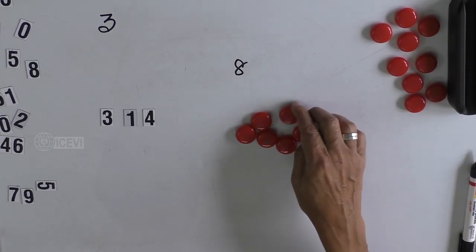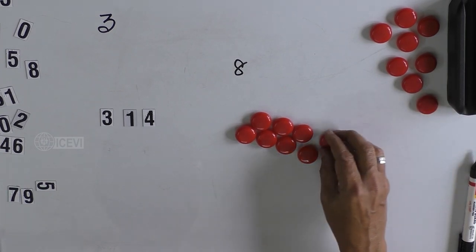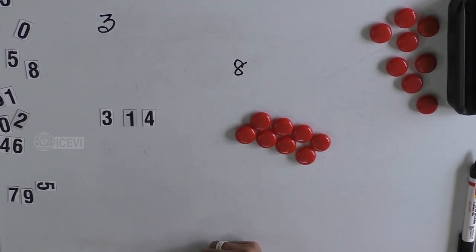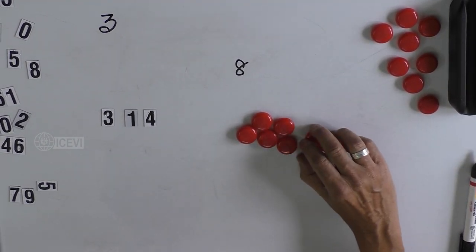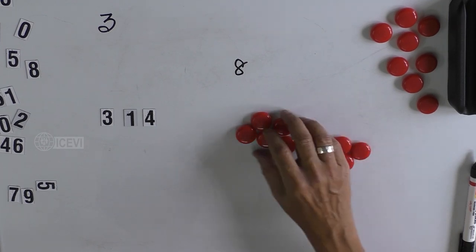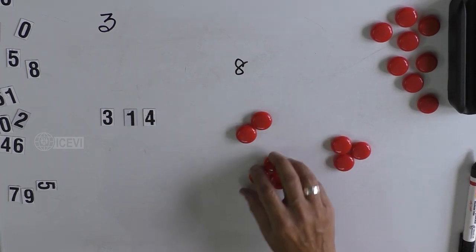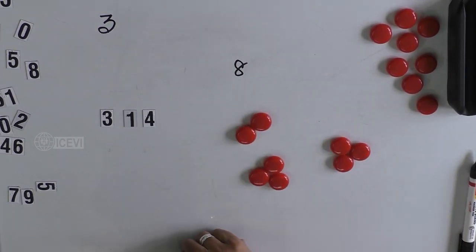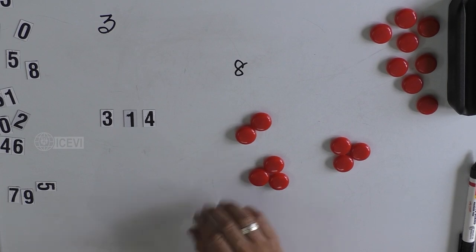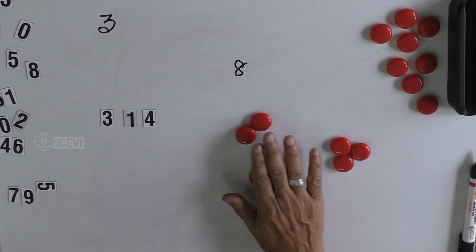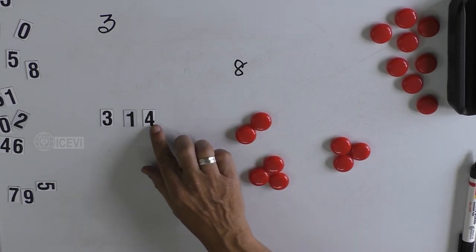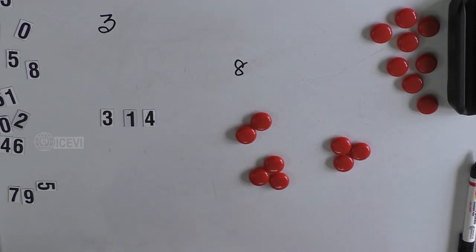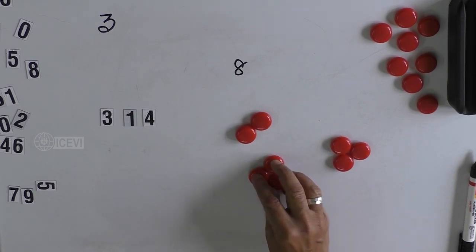4 plus 4 is 8, so you take 8. Now you have to ask whether the number 8 is divisible by 3. You group them in terms of 3, and you get 2 as the remainder. That means 314 is not divisible by 3.